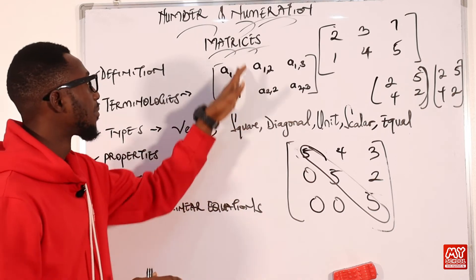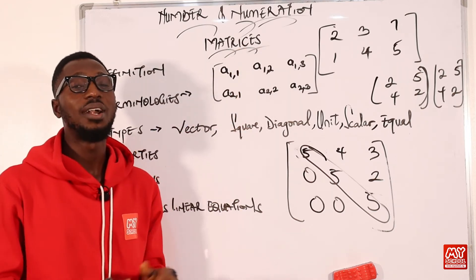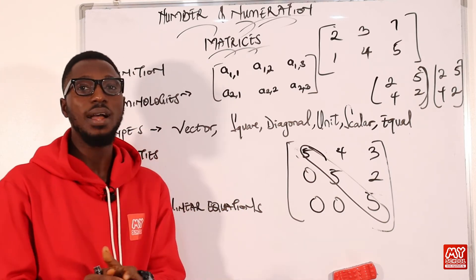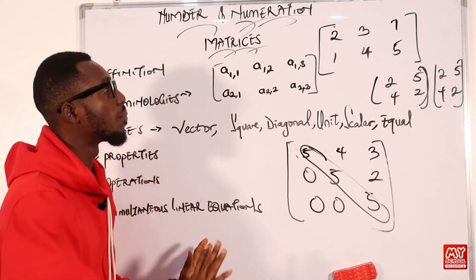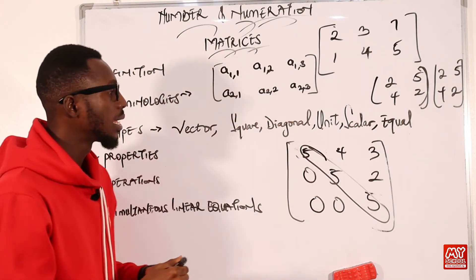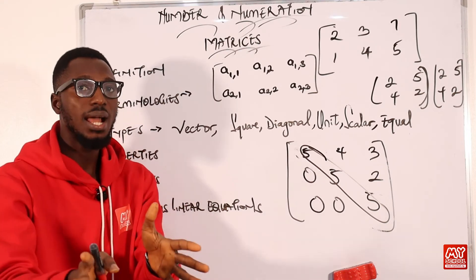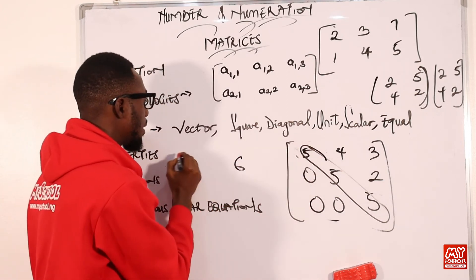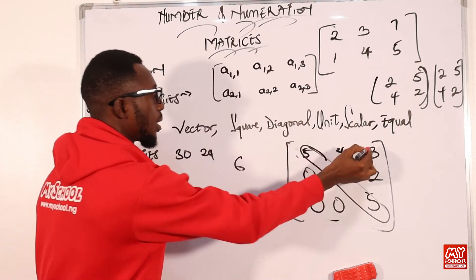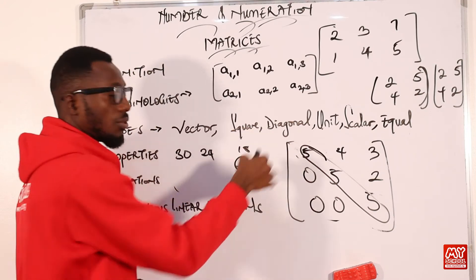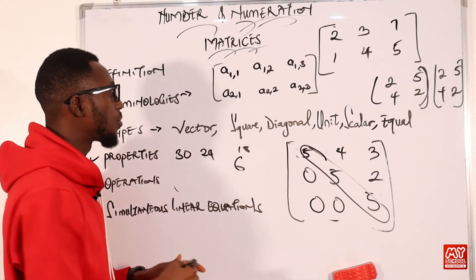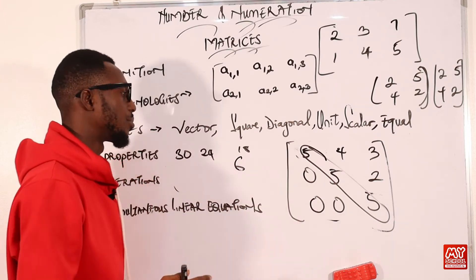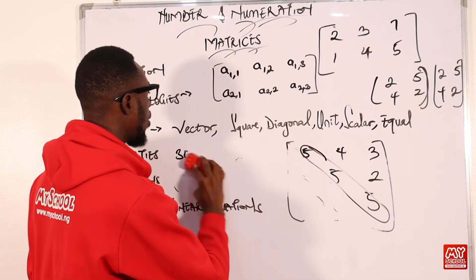The operations we can carry out in matrices include addition, subtraction, and multiplication. Multiplication can be by scalar — using a particular number to multiply an entire matrix. For instance, applying scalar multiplication with 6: 6 times 5 is 30, 6 times 4 is 24, 6 times 3 is 18. For matrix multiplication you are using an entire matrix to multiply another matrix.